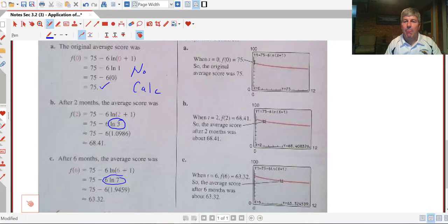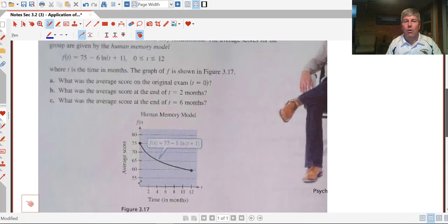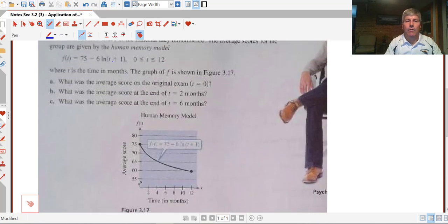We can also do this graphically. As the textbook did, they did this graphically. So we have to put our function into our calculator. Let's think about this though. We already know that when we put 0 in, we know our x's range, our independent variable ranges between 0 and 12.